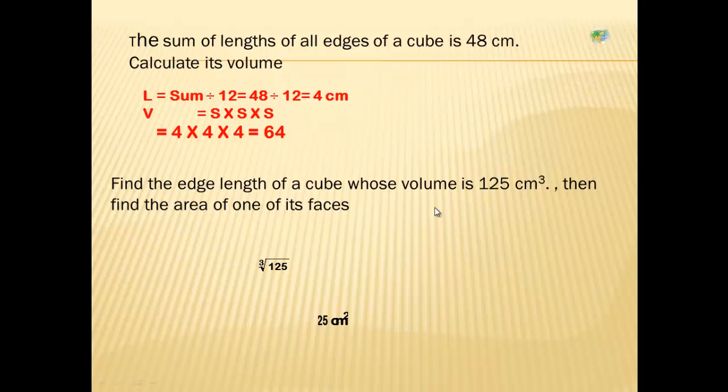Cubic root. Shift square root on the calculator will give us cubic root of the volume. Then, we can find edge length. So edge length is cubic root of 125 equals 5 centimeters. Then, we have a side length. We can calculate the area of one face equals side times side equals 5 times 5, 25 centimeters square.